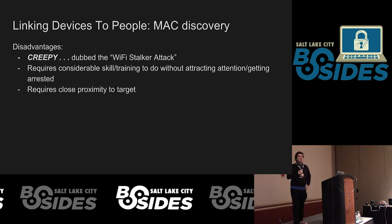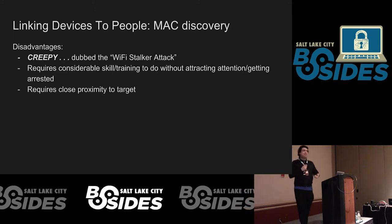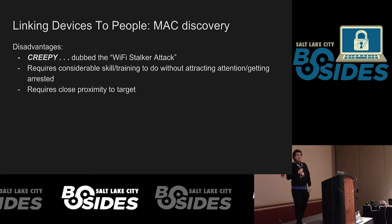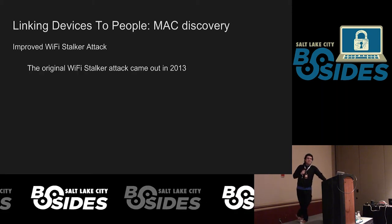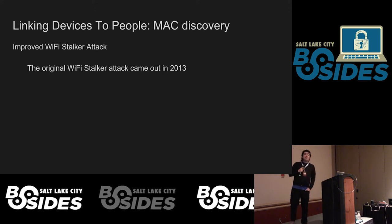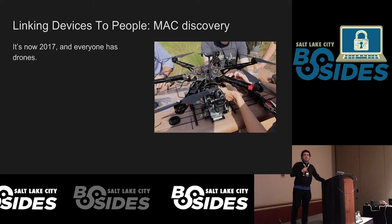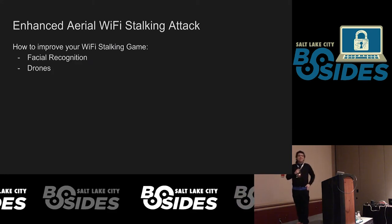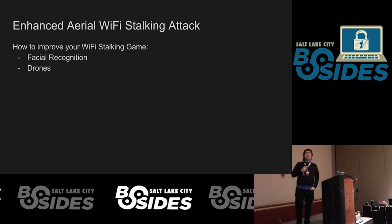The drawback is that it's creepy and requires considerable skill and training to do without attracting attention or getting arrested. If you're following someone with a Yagi antenna and they see you on every street corner, they're probably going to call the cops. It also requires close proximity to the target, which is never preferable. However, this technique can be improved. The original Wi-Fi stalker attack came out in 2013 — it's now 2017, and literally everyone has drones. So hypothetically, if you wanted to improve your Wi-Fi stalking game, you could use facial recognition on drones: this alleviates the problem of having to follow someone with an antenna, it's easier to be stealthy, and physical exertion is not required.